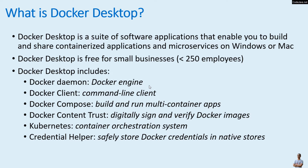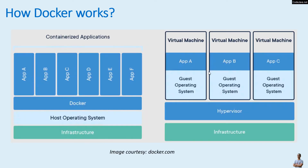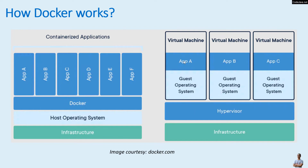Let's understand how Docker works in general and how it differs from a virtual machine. The Docker engine is responsible for managing and running containerized applications. Each application runs in a separate container, and all containers share the same host operating system. With a virtual machine, each application must run inside a VM that requires its own guest operating system running on the host via hypervisor technology.